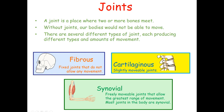We've then got cartilaginous joints, which are slightly movable. We find these in areas such as in between our vertebrae, where there's going to be a little bit of movement, but not lots. The third type, and the most important for us, are our synovial joints. These are freely movable joints that allow the greatest range of movement, and most of the joints in the body are synovial joints. We can choose when they move and when they don't, and they're the ones we think about in a sporting context.